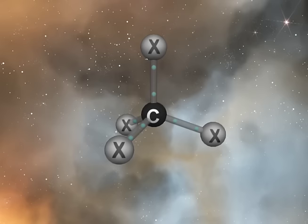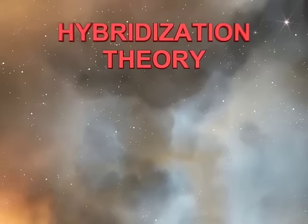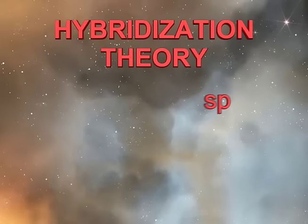In other words, bond angles in three dimensions can be predicted. The possible hybrid combinations for a carbon atom are sp3, sp2, and sp, and are explained in detail in subsequent sections.